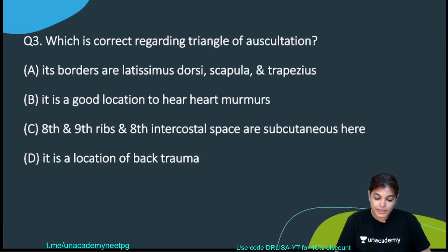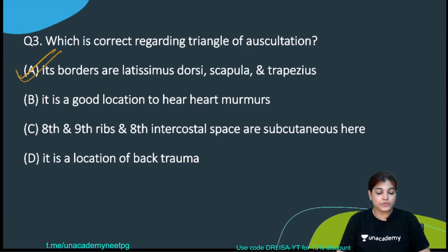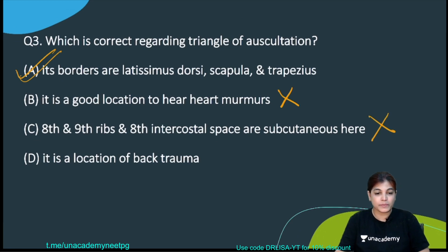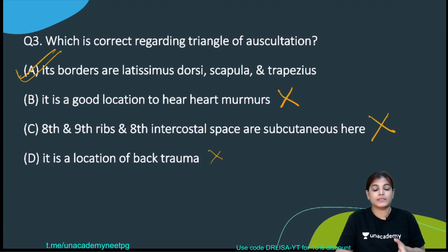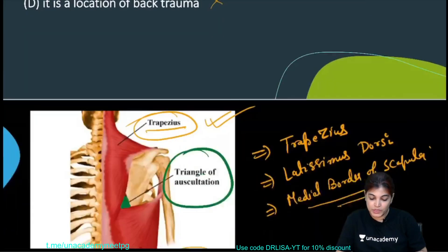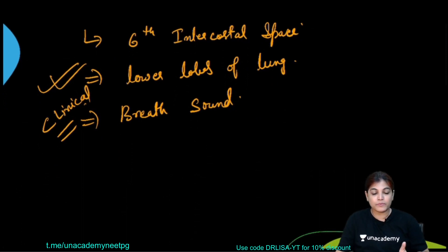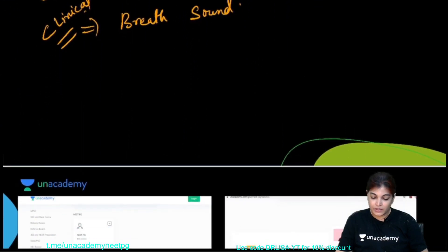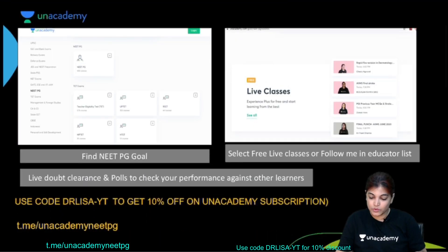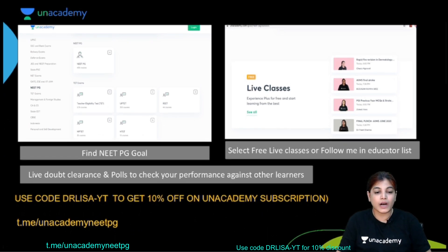Coming back to the MCQ: option A — borders are latissimus dorsi, scapula, and trapezius — is correct, as confirmed by the diagram. Option B — it is a good location to hear heart murmurs — is wrong; it is used for hearing breath sounds. Option C — 8th or 9th intercostal space — is wrong; it is the 6th intercostal space that is related. Option D — it is due to back trauma — is wrong; it is a normal triangular space on the back.